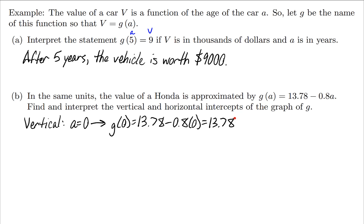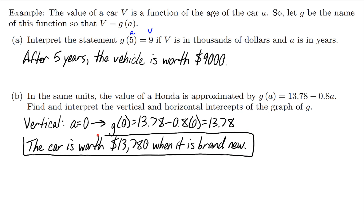Now let's write a sentence to match up with that. The age was zero years, so the car is brand new, and the value of the car was 13.78, but remember that was in thousands of dollars. So when I write my answer, I'll interpret that in dollars: The car is worth $13,780 when it is brand new.